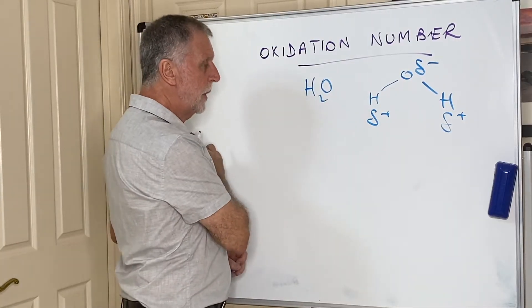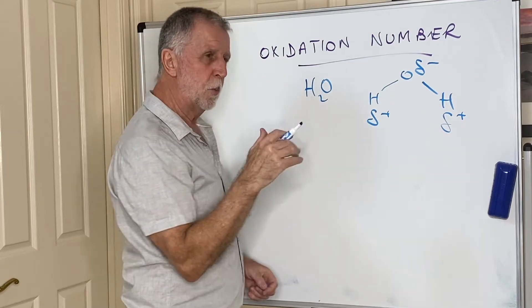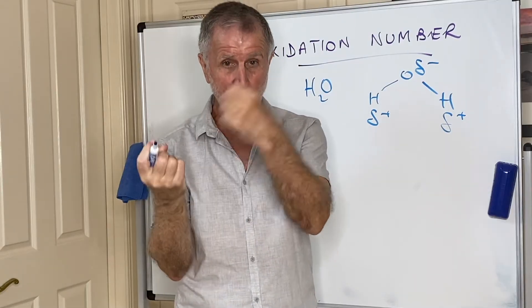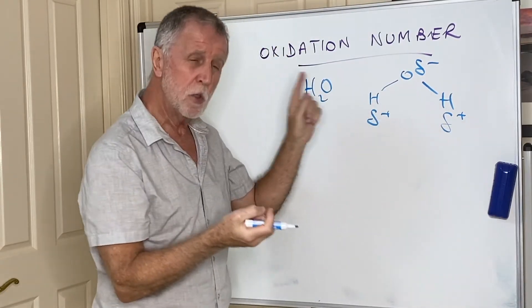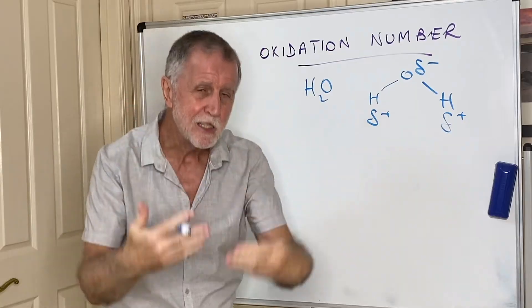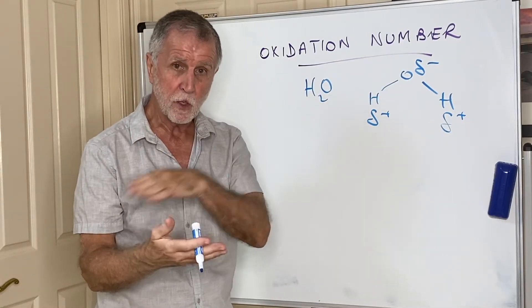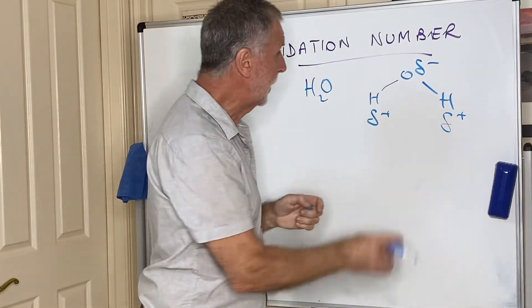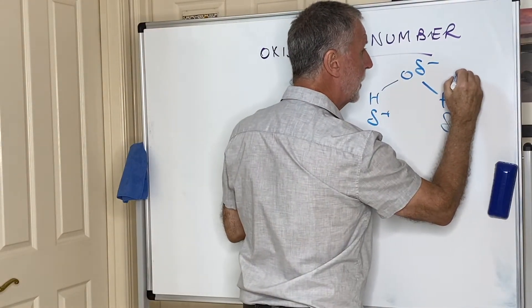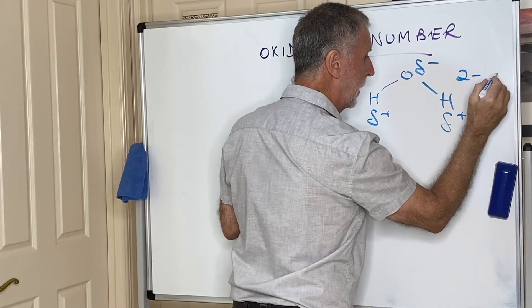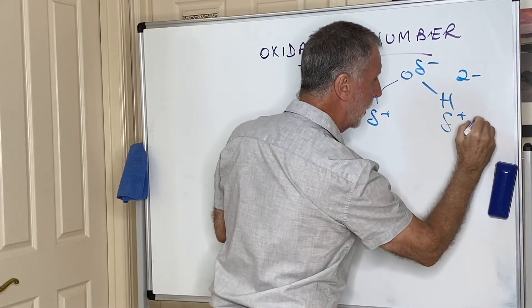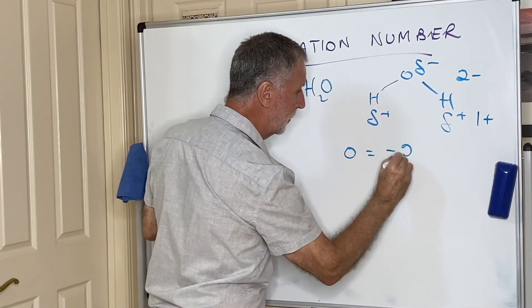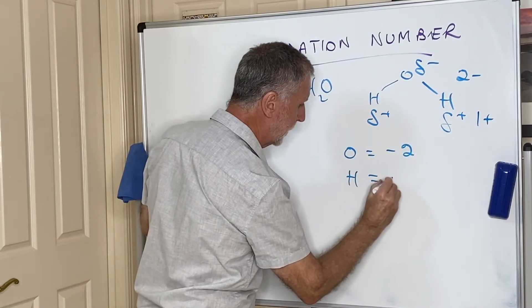In terms of oxidation number, what we do is what we did with the ionic. The ionic has ions, the electrons are being transferred. Here they're not being transferred, but there is a tendency for the oxygen to get them over the hydrogens. We allow that tendency to go all the way. So in other words, oxygen now becomes a 2- ion and hydrogen becomes a 1+ ion, and the oxidation numbers would be oxygen is -2 and hydrogen is +1.